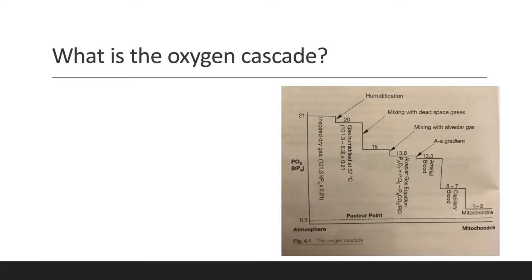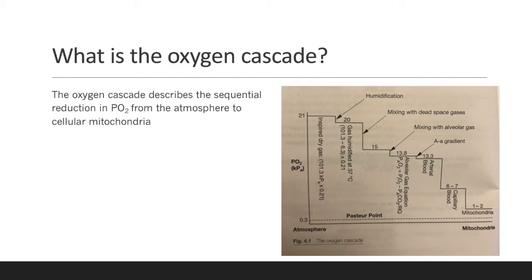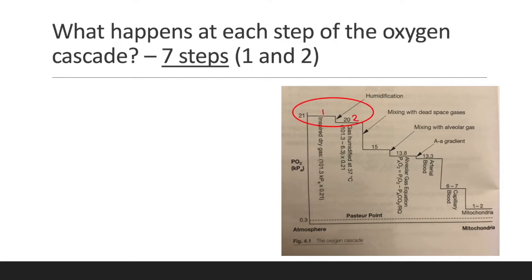What is the oxygen cascade? The oxygen cascade describes the sequential reduction in PO2 from the atmosphere to the cellular mitochondria. Now we will look at what happens at each step of the oxygen cascade.